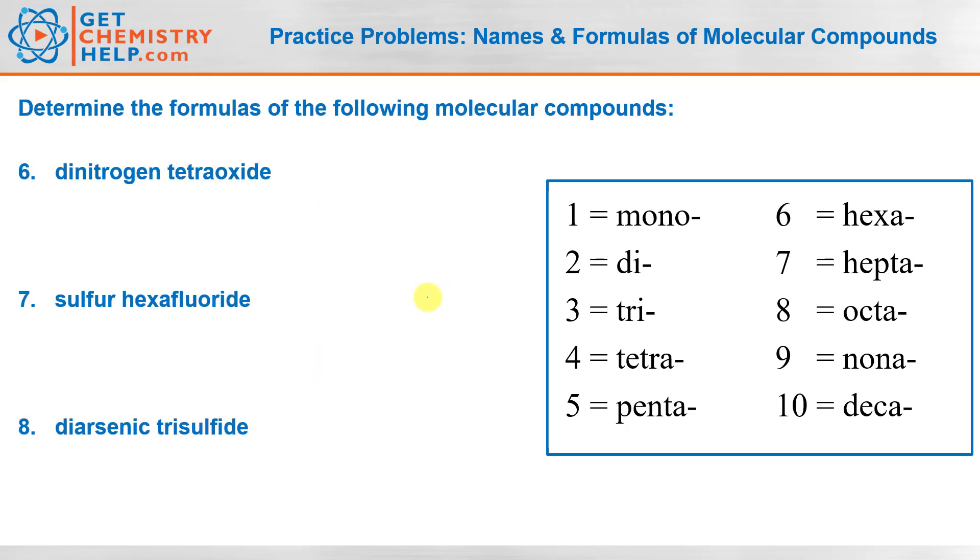Now let's try a few the other way, so here we have the name and we want to determine the formula. Dinitrogen, well di means two, so two nitrogens, N2. And then tetraoxide, well oxide must have come from oxygen and tetra we see means four, so four oxygens. So N2O4. Notice again, like I was just saying, we do keep both vowels. You don't need to drop the A in tetra.